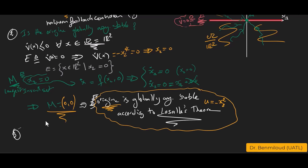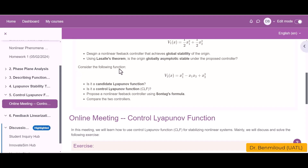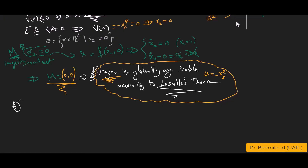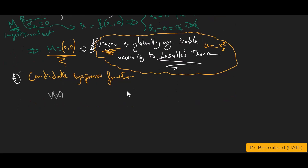Let us move to the next question. Consider the function v₂(x) = x₁² - x₁x₂ + x₂². Is it a candidate Lyapunov function?